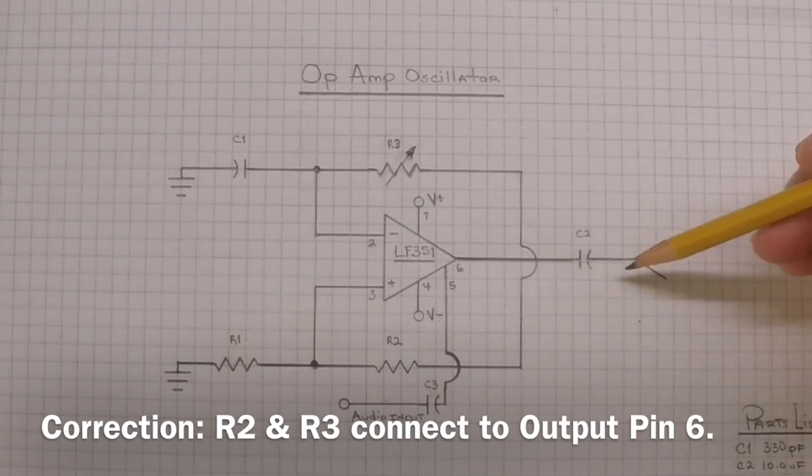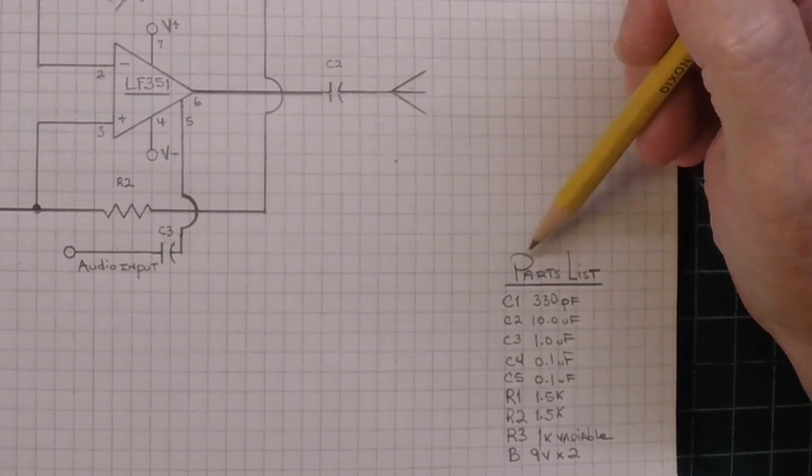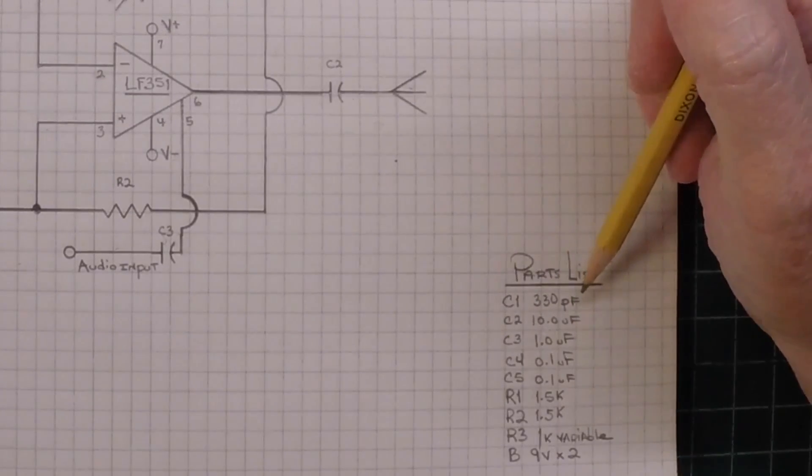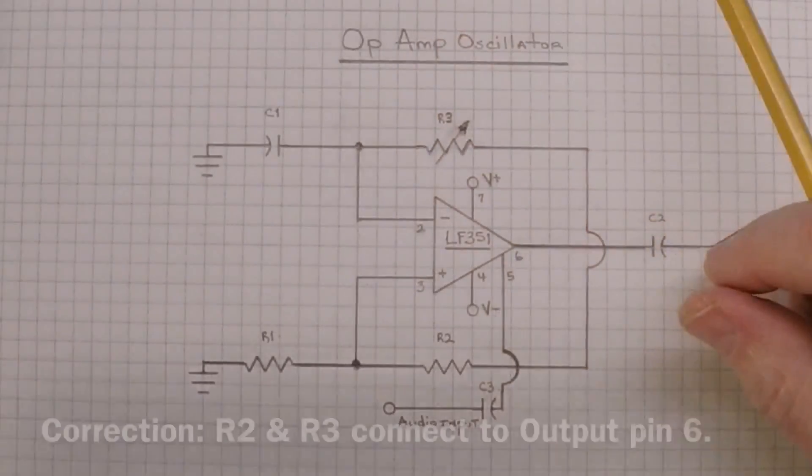And you can see the output pin number six just goes through a capacitor straight back to the wire antenna, C2 being a 10 microfarad cap. I'll zoom in here on the parts list as well, so you guys will have that for reference, so just in case you decide to build one for yourself.